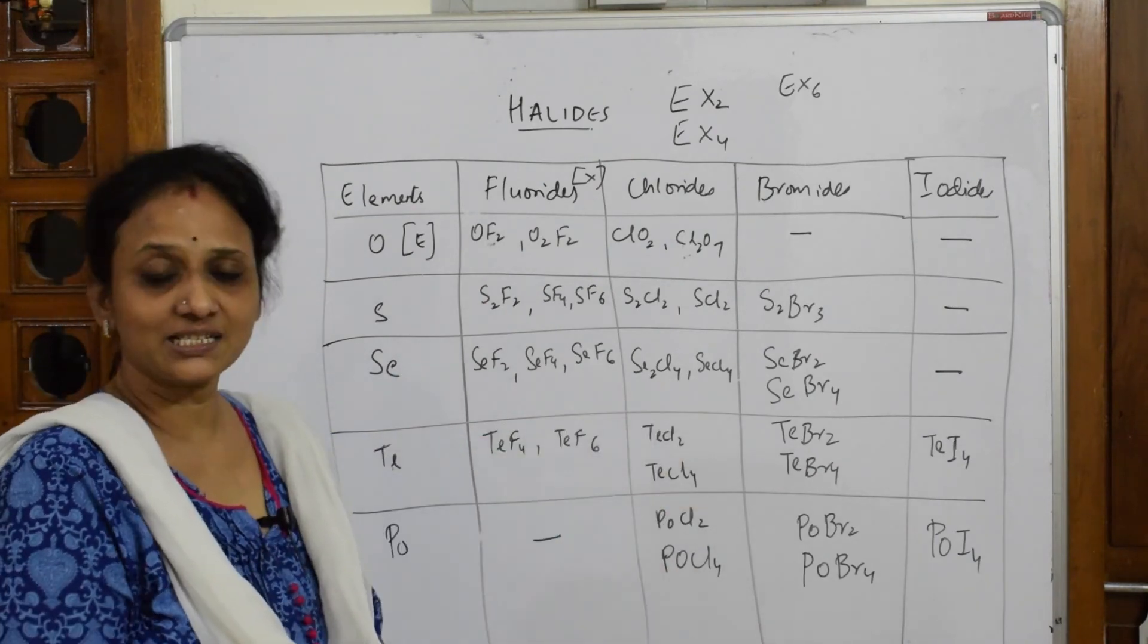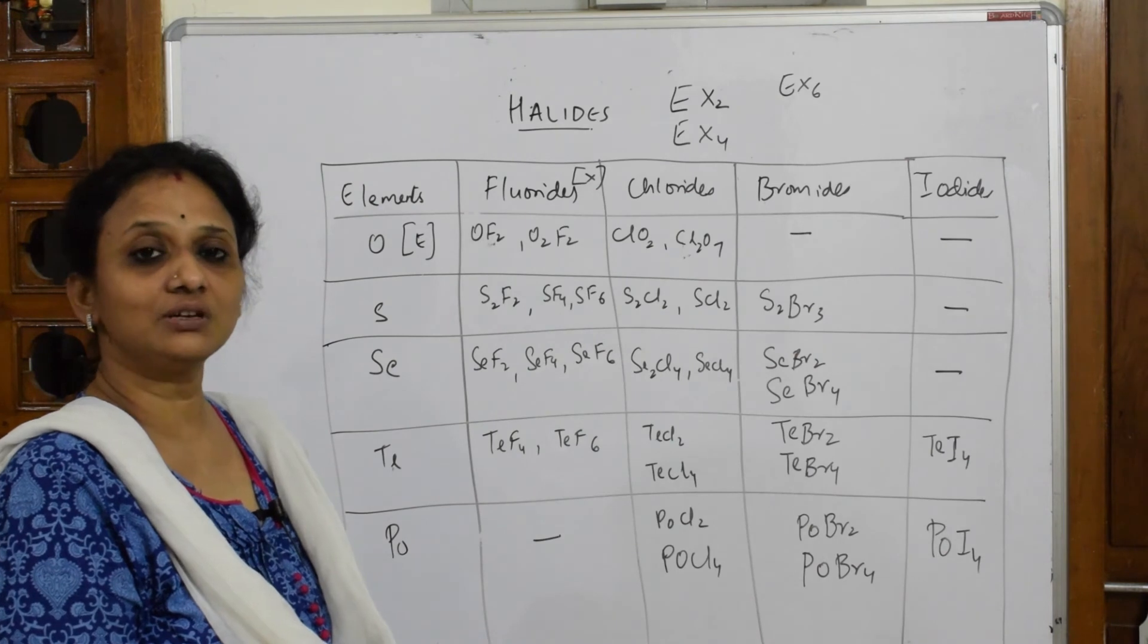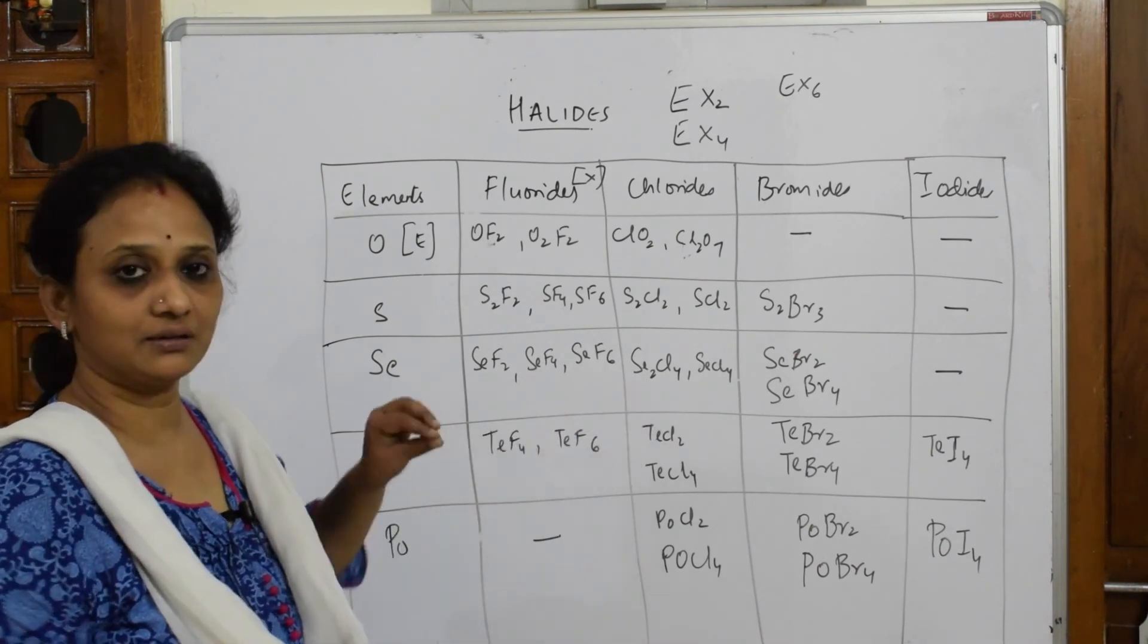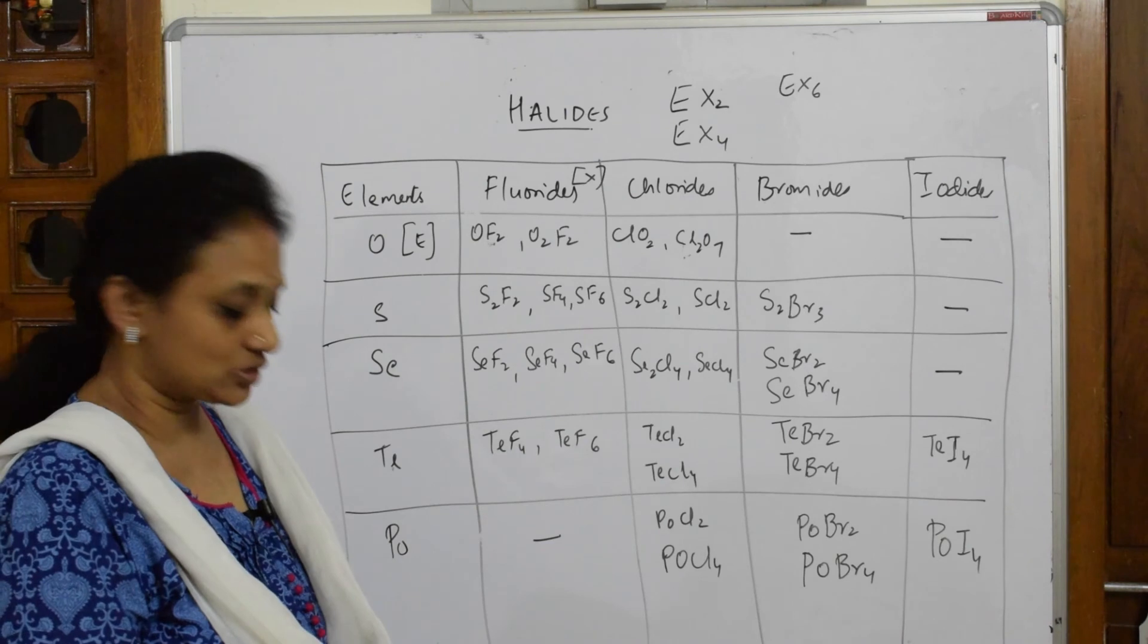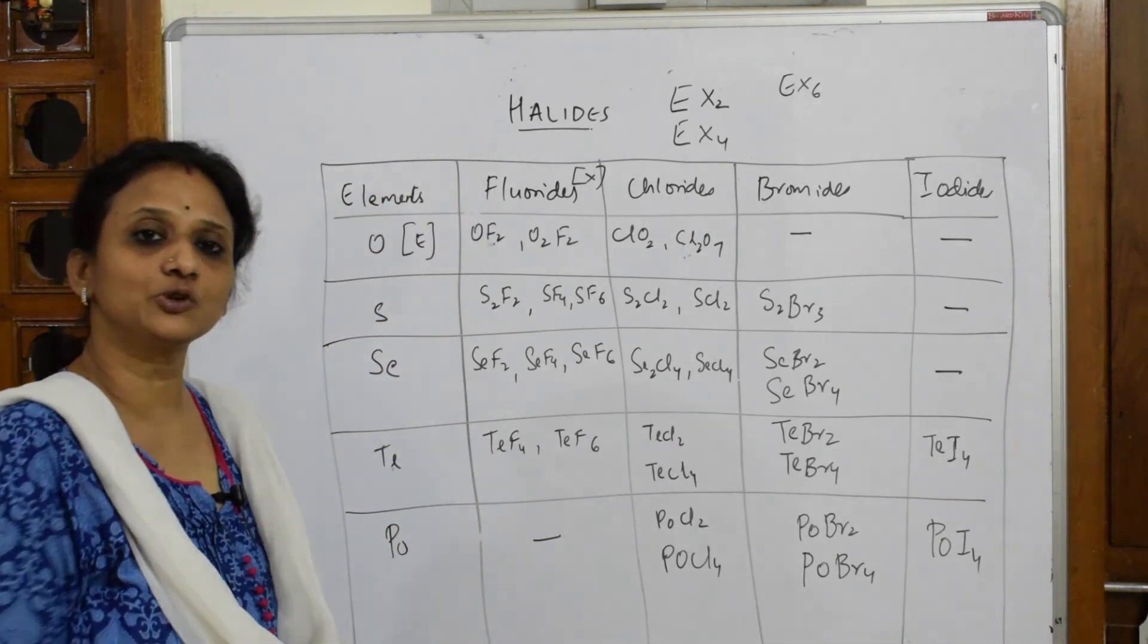So I listed out all the halides. Please note it in your book. If you want to start doing questions, it will be easy for us to pick up based on the halogen combinations. So as of now, please note the type of halides which are shown by group 16 elements.